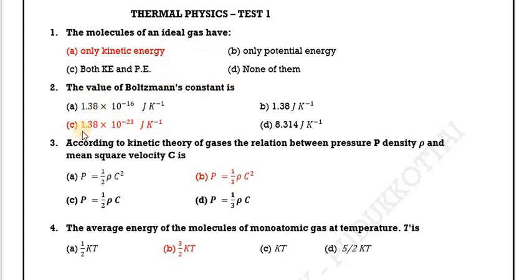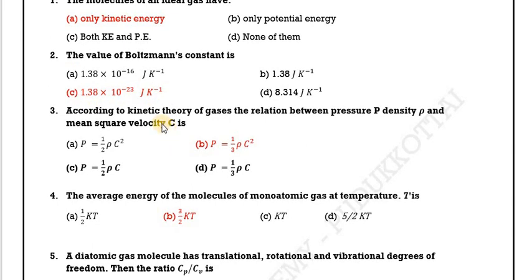The value of the Boltzmann constant is 1.38 × 10⁻²³ joules per kelvin. According to the kinetic theory of gases, the relation between pressure p, density rho, and mean square velocity c is: p equals 1/3 rho c squared.